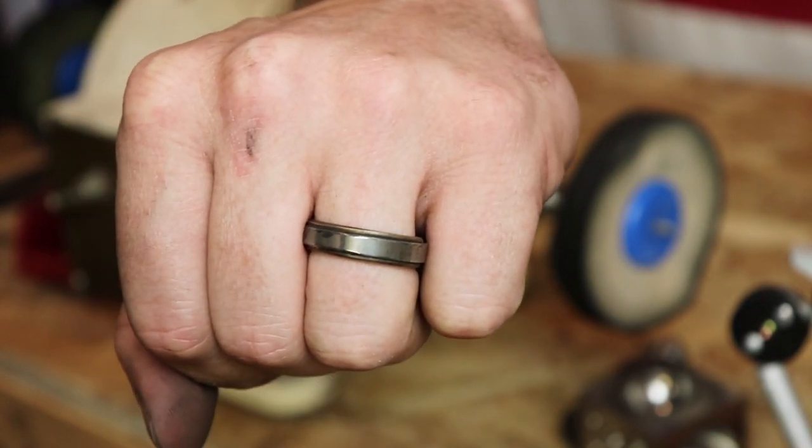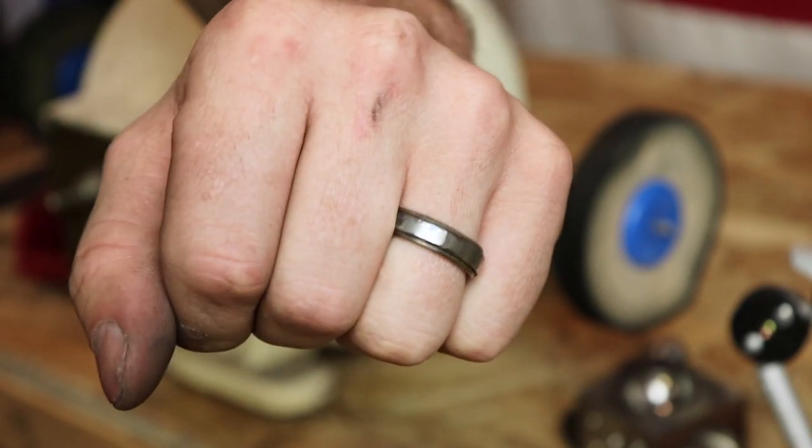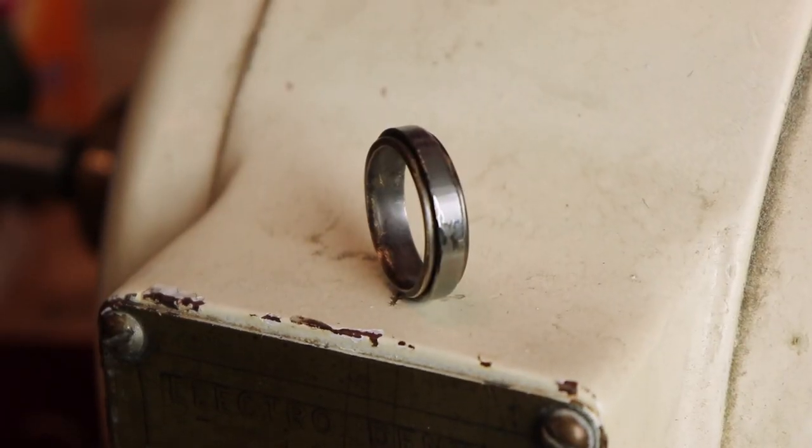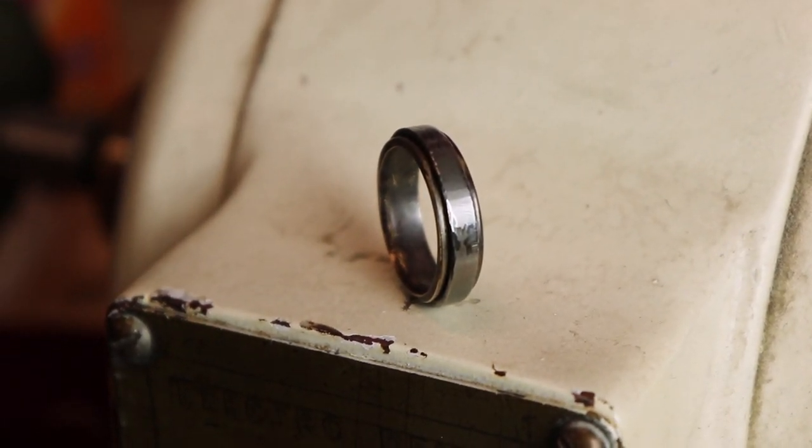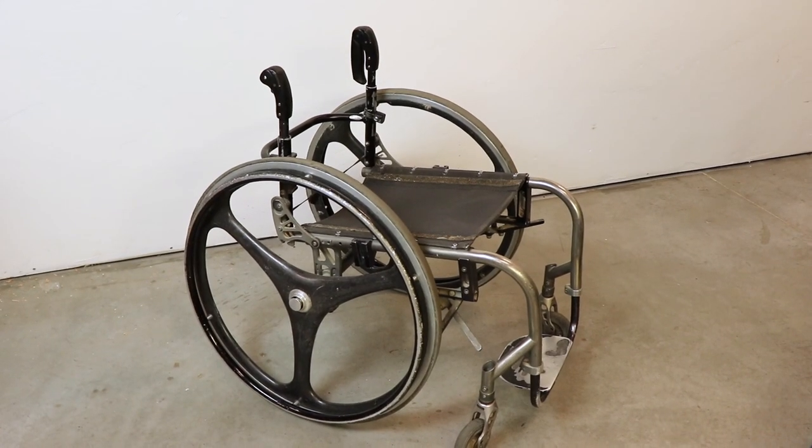Today I'm going to show you how I made this ring for my friend Zach from JerryRigEverything. It's made from 14 karat gold and titanium from his fiancee Cambry's wheelchair that's solid titanium.